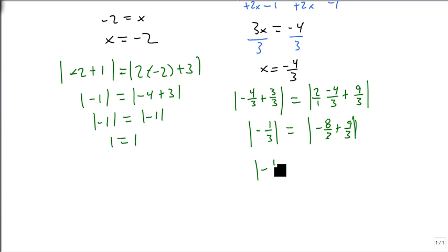Is that the same as the absolute value of minus 1 third? Minus 8 thirds plus 9 thirds is 1 third. And when I take the absolute value of both sides, I get 1 third equals 1 third. So if that's the same, then these are my two answers.